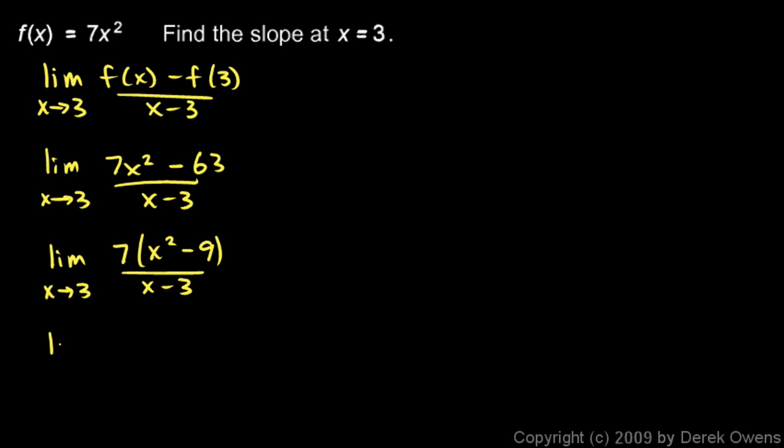And x squared minus 9 obviously factors. So I have 7 times x plus 3 times x minus 3 over x minus 3. And there we go. So this is just going to be the limit as x approaches 3 of 7 times x plus 3.